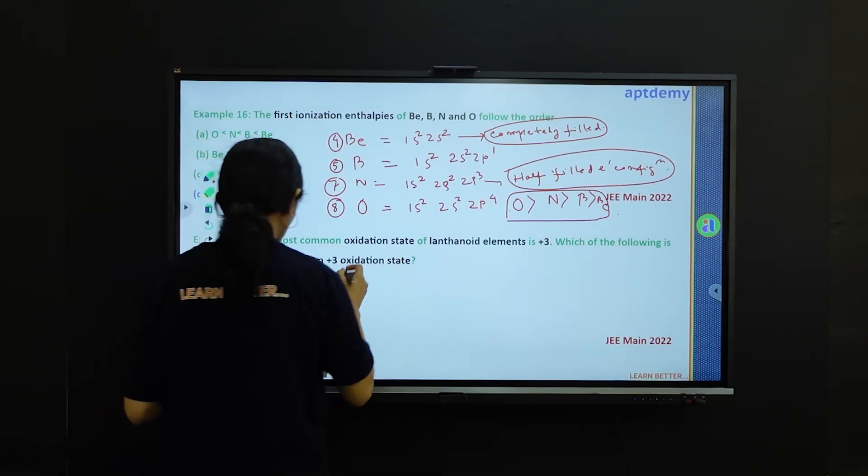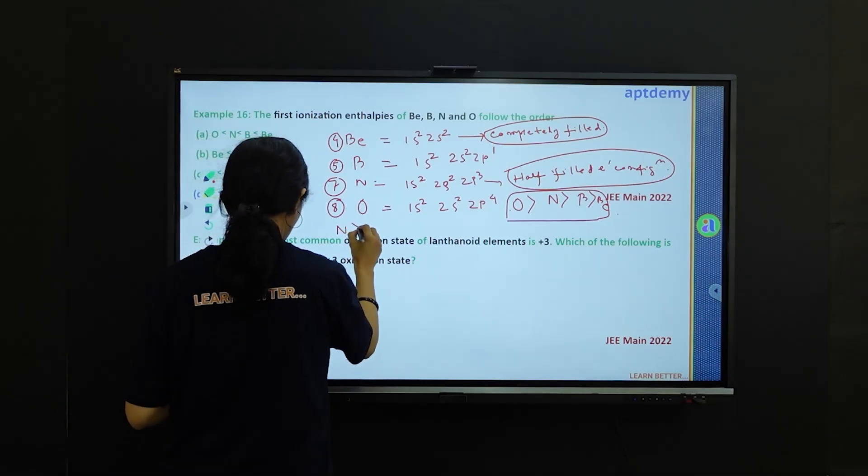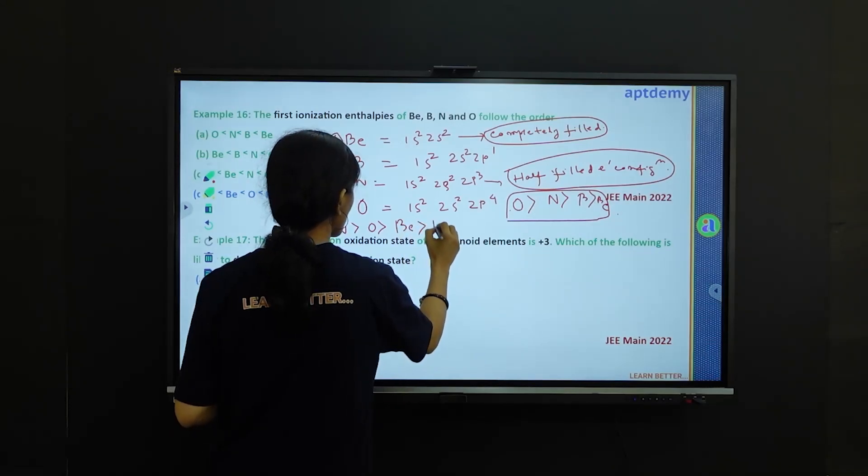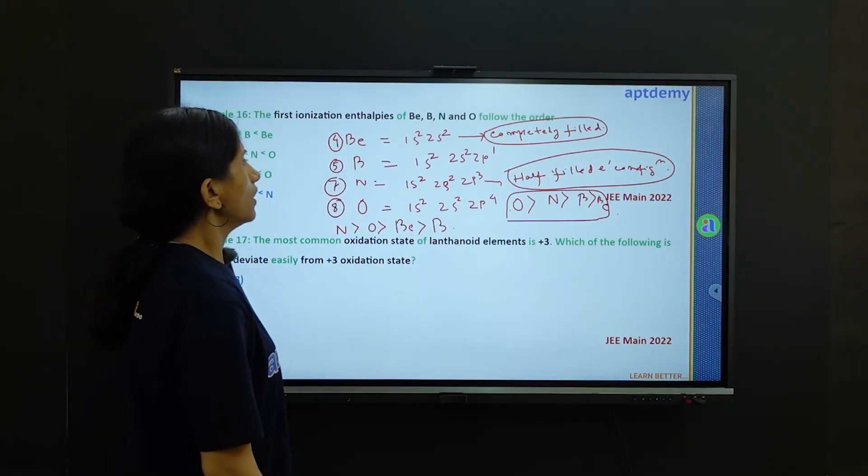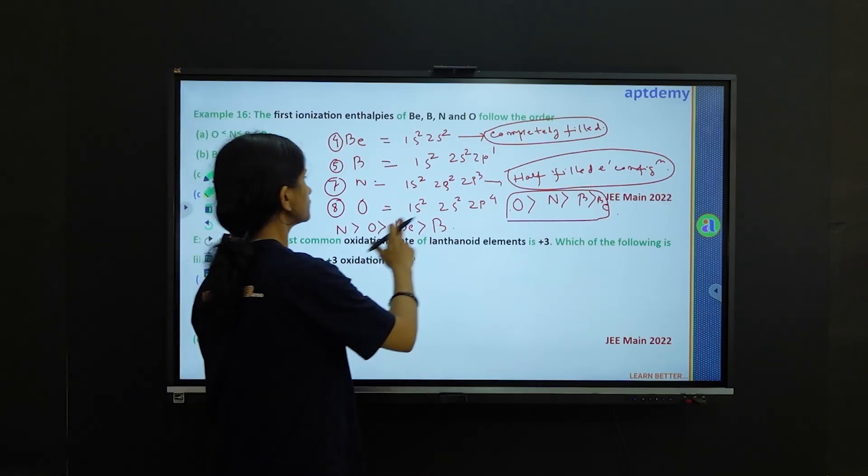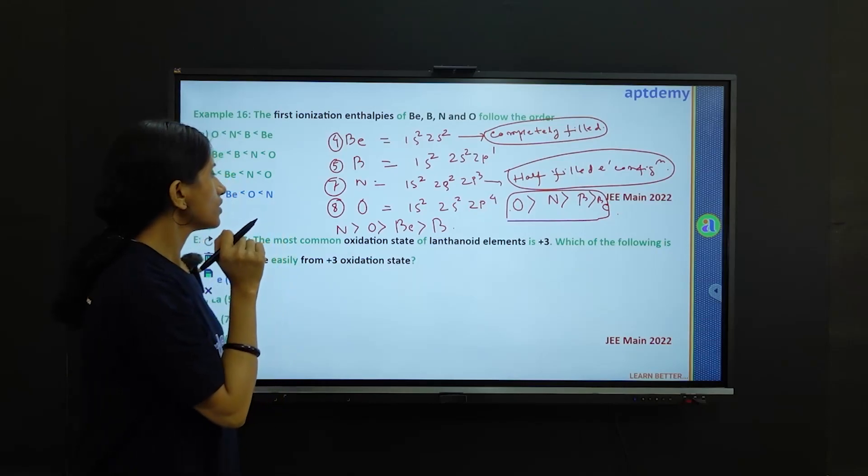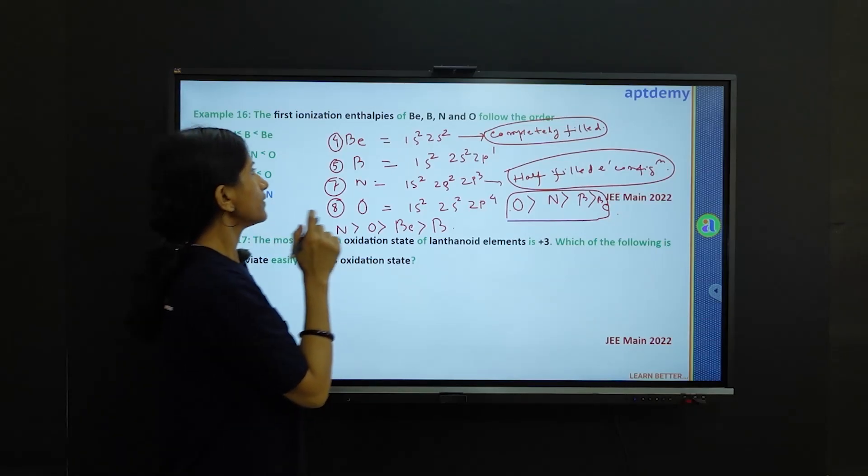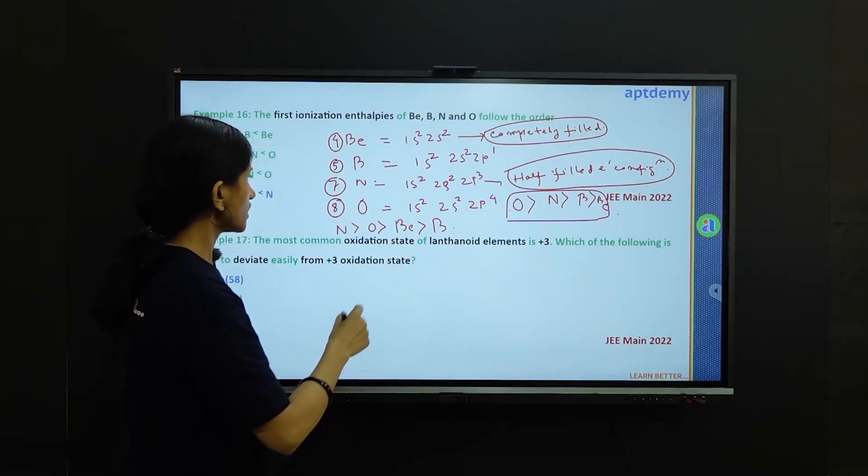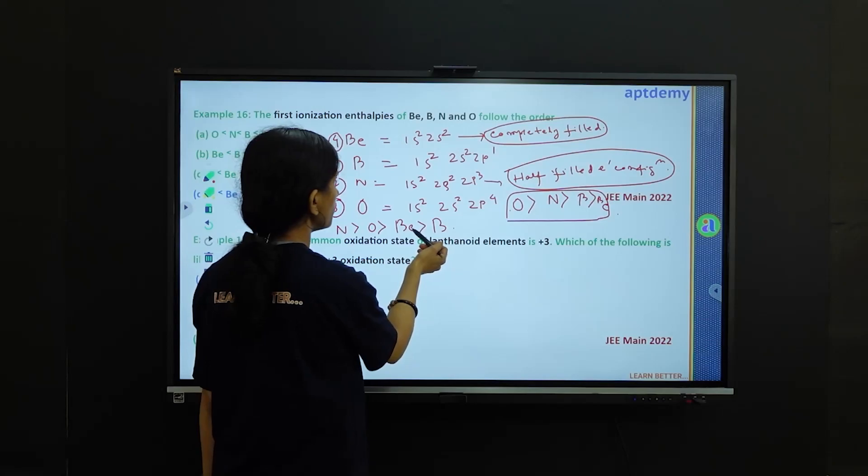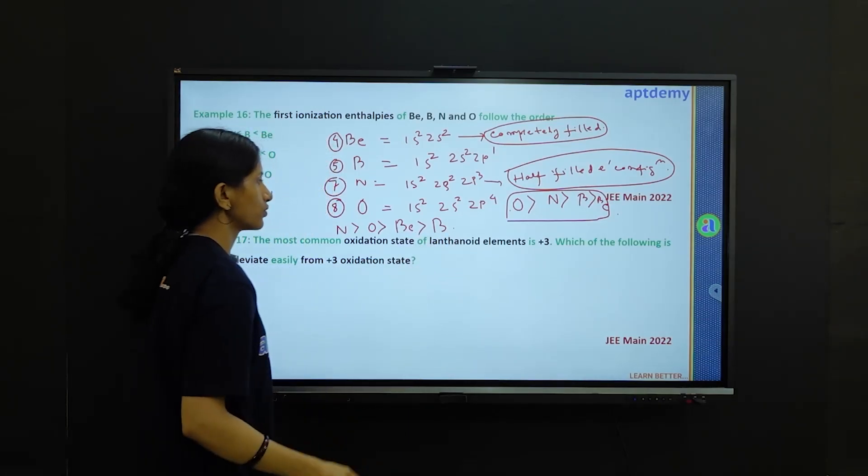The proper trend should be nitrogen is greater than oxygen is greater than beryllium is greater than boron. Because nitrogen is having half filled electronic configuration and also beryllium which is having completely filled electronic configuration. So nitrogen will come before oxygen and beryllium will come before boron. So this is the correct trend and it is following option D. So D is the correct option.